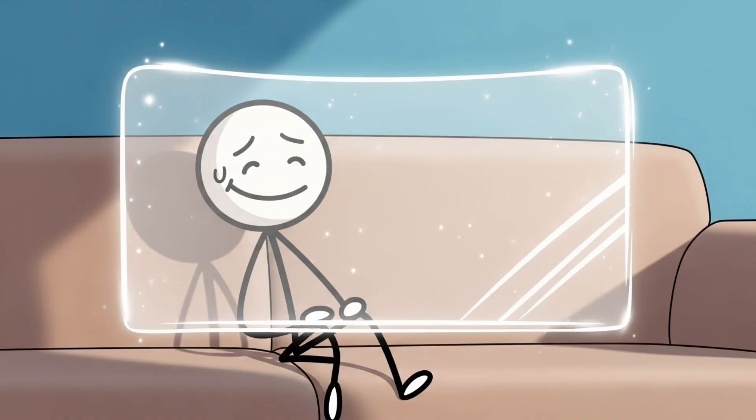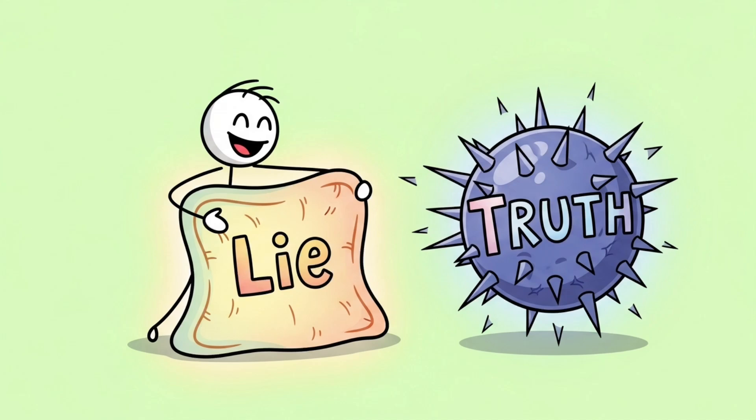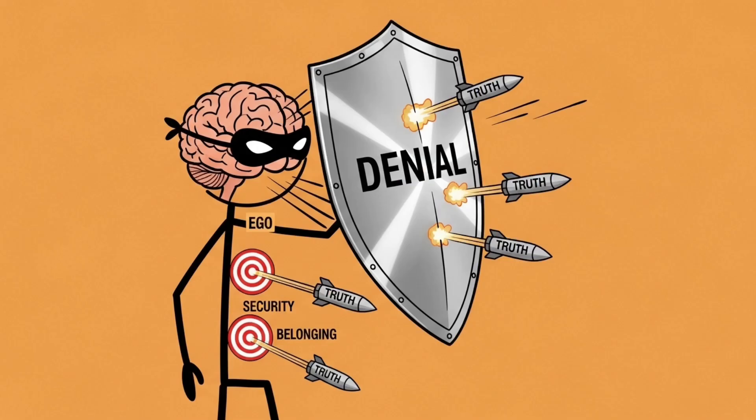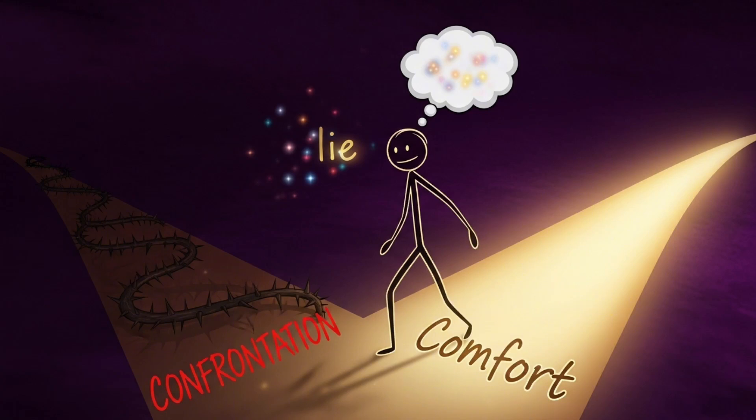Number one, the comfort filter. And finally, the biggest reason your brain hides the truth from you: comfort. The human mind will do almost anything to avoid discomfort, even if it means believing a lie. When the truth threatens your sense of security, belonging, or ego, your brain steps in with its favorite defense mechanism, denial. It filters out conflicting data, rewrites logic, and pats you on the head like, there there, let's not ruin the vibe. This is why you can sense someone lying but still go along with it. Because the alternative, accepting betrayal, disappointment, or awkward confrontation, feels worse.